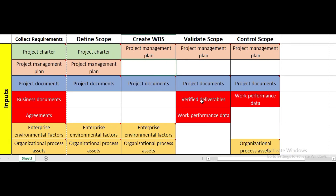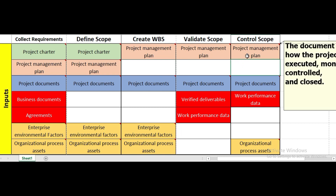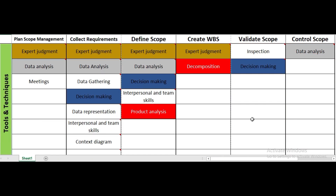Enterprise environmental factors and organizational process assets continue as inputs. In validate scope, the distinct inputs are verified deliverables — received from the control quality process — and work performance data from the execution process group. For control scope, the inputs are project management plan, project documents, work performance data, and organizational process assets.